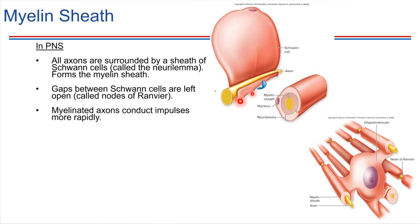This wrapping — the fact that the Schwann cell wraps a significant portion of the axon — actually allows the signal to be sent more quickly than it could otherwise.